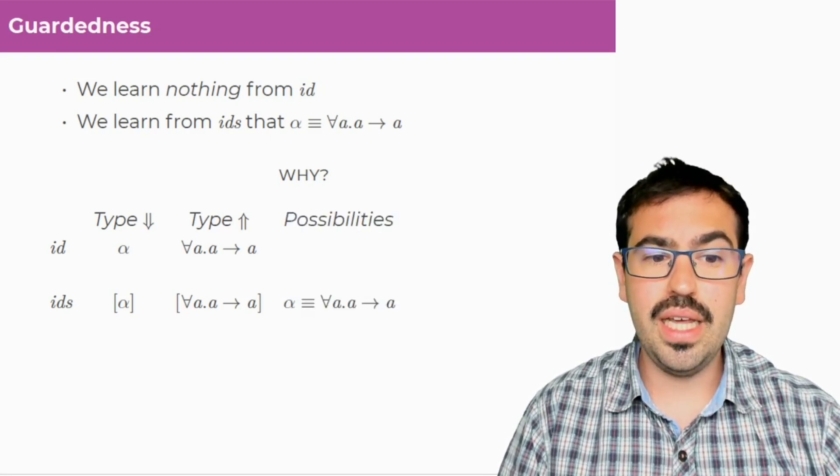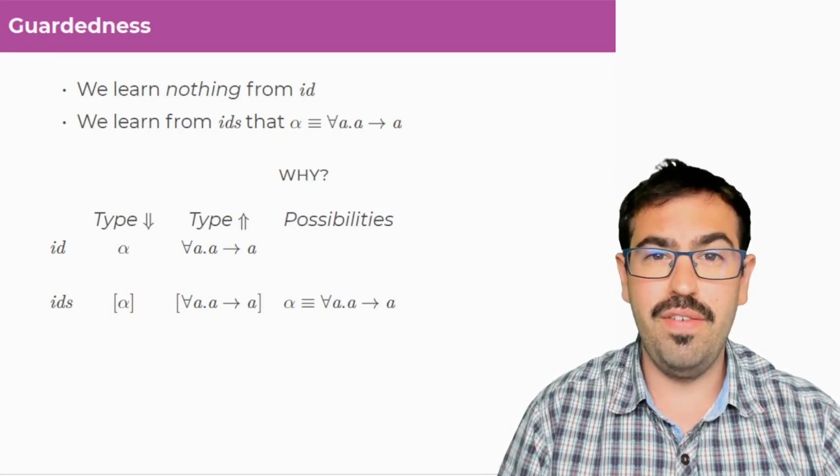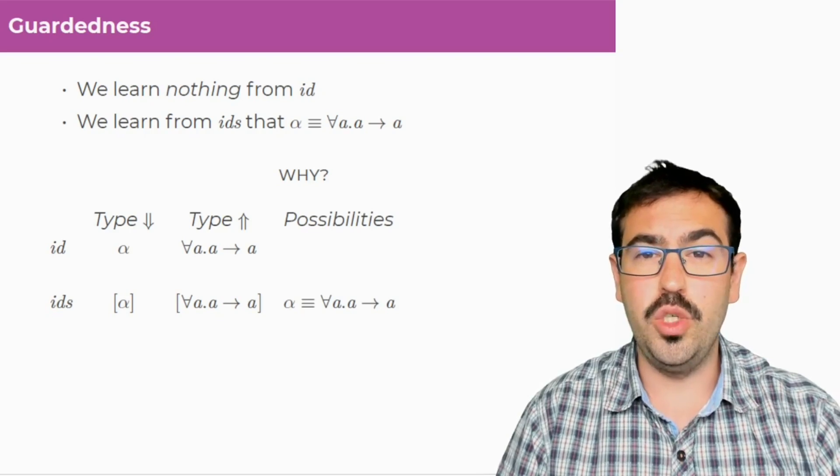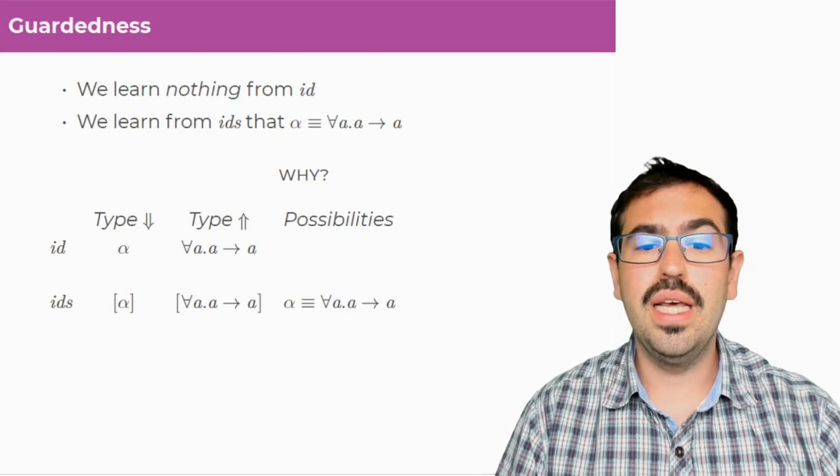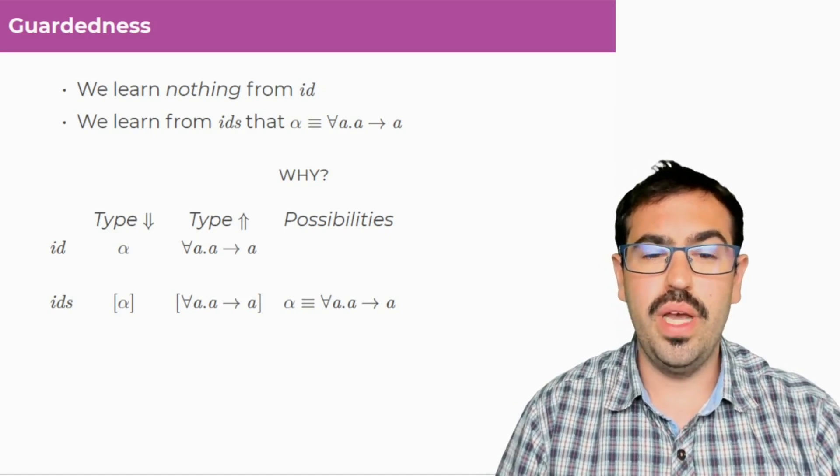So actually, in the case of IDs, we have only one possibility. In order for the list of alpha and the list of for all A dot A to A to be equal, alpha has to be for all A dot A to A.